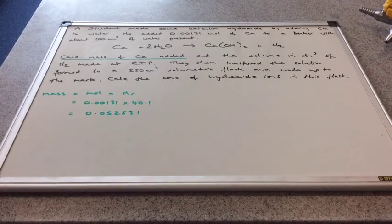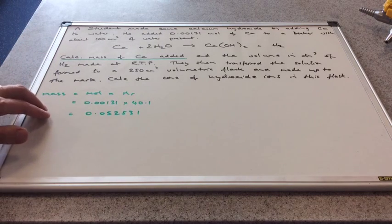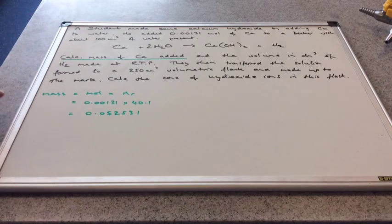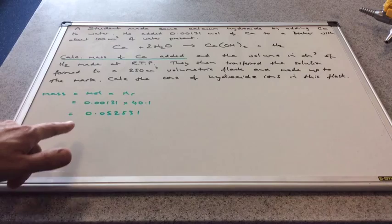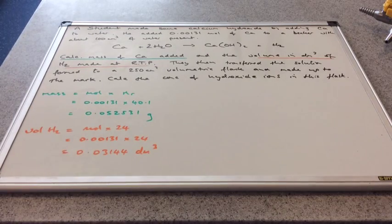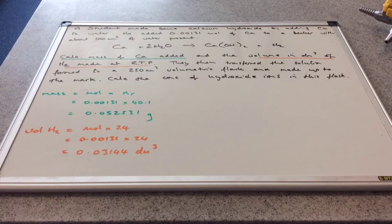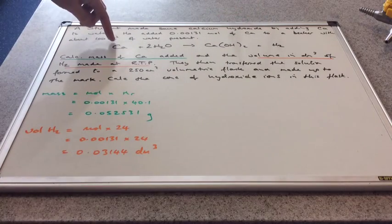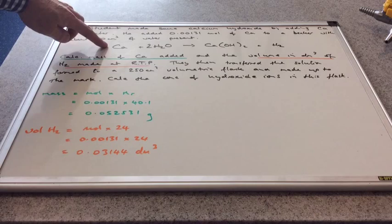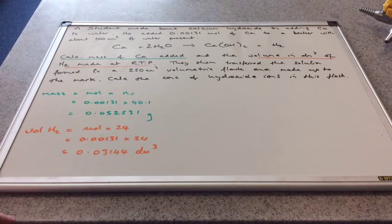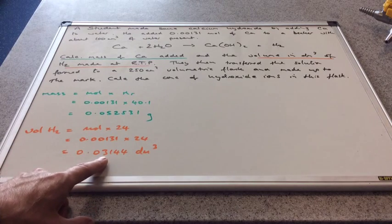Because there's a lot of information, I'm underlining various parts in different colors. The mass of calcium: we're told how many moles the student used, so mass is simply moles multiplied by the MR, coming out at 0.052531 grams. For the volume of hydrogen, the student added 0.00131 moles of calcium. From the mole ratio in the equation between calcium and hydrogen, it's 1 to 1. So the moles of hydrogen made equals the moles of calcium used. Volume of hydrogen equals moles times 24, coming out at 0.03144 decimetres cubed.